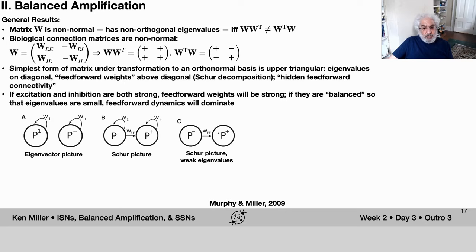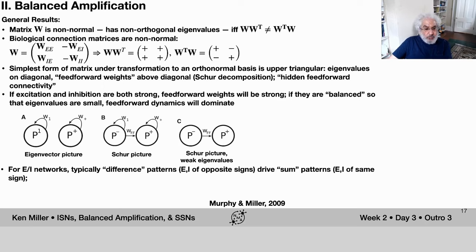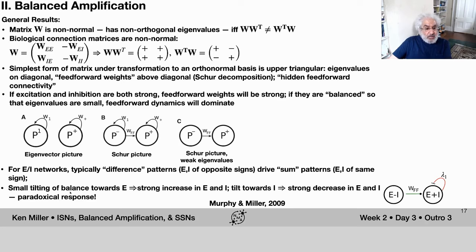If excitation and inhibition are both strong, feed-forward weights will be strong. If they're also balanced so eigenvalues are small, feed-forward dynamics will dominate. For EI networks, difference patterns - in which excitatory and inhibitory neurons have firing rates of opposite signs about the fixed point - drive patterns in which excitation and inhibition have the same sign. A small tilting of the balance toward excitation causes a strong increase in both excitatory and inhibitory firing rates, and a tilt toward inhibition causes a strong decrease - precisely the paradoxical response.